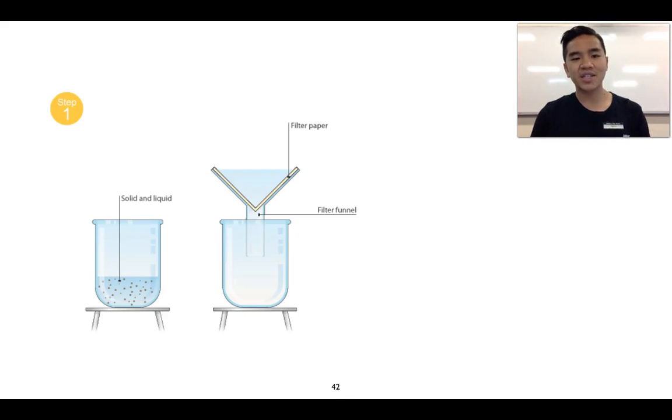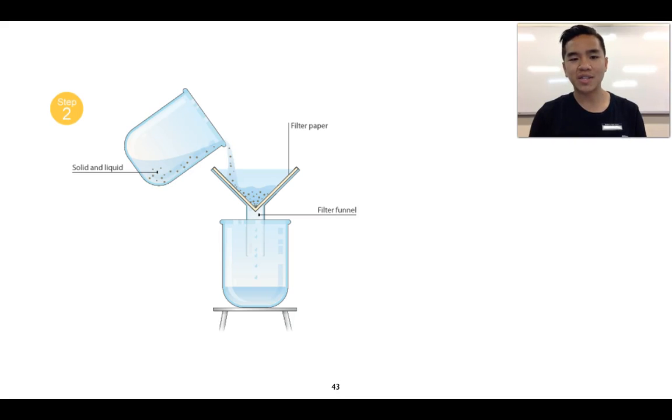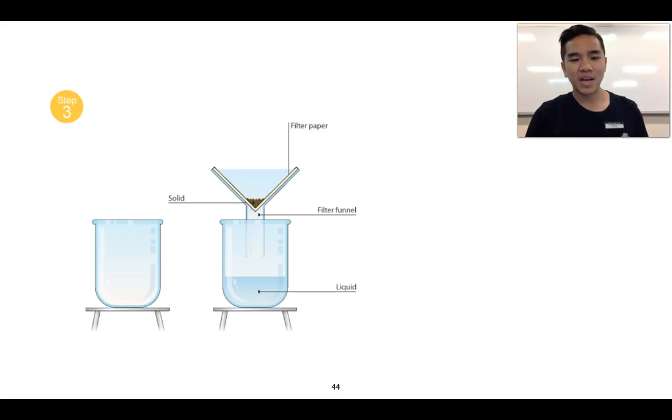These next series of images show you in three steps how this filtration technique takes place. We've got our solid and liquid mixture, we've got our filtration apparatus, we pour our mixture in, and it's going to separate the solid from the liquid. Eventually we can completely separate the two, and the liquid water will filter all the way through into our beaker in this case.